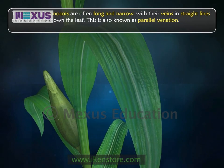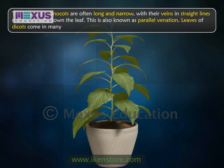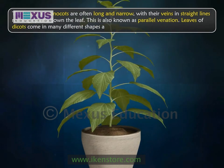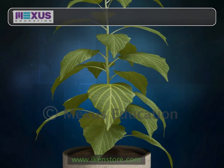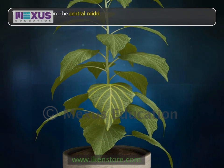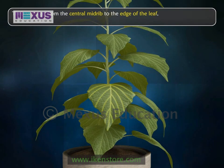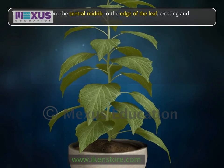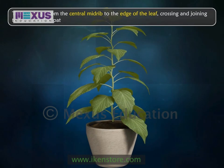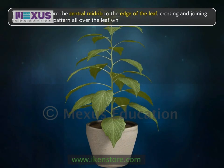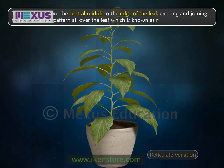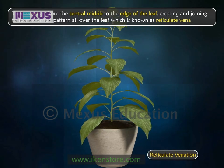Leaves of dicots come in many different shapes and sizes. Their veins go from the central midrib to the edge of the leaf, crossing and joining to form a netted pattern all over the leaf, which is known as reticulate venation.